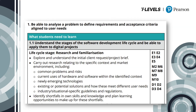This is an example of how the specification is laid out. This shows the start of performance outcome 1: be able to analyse a problem to define requirements and acceptance criteria aligned to user needs. At the very top, under 'what students need to learn', you'll see the first knowledge or skill statement for the PO. In this instance, PO 1.1: understand the stages of the software development life cycle and be able to apply them to digital projects. The '1' refers to performance outcome 1, and '.1' because it is the first specialist skill within that performance outcome.